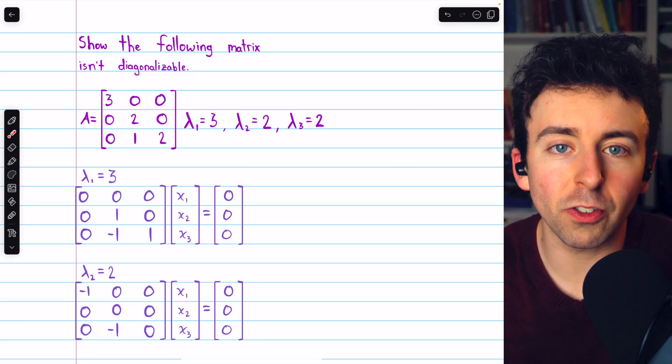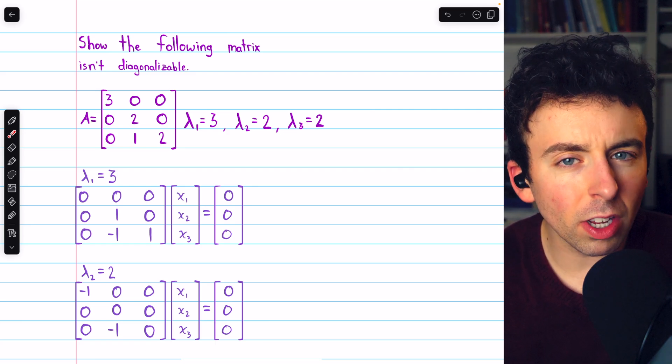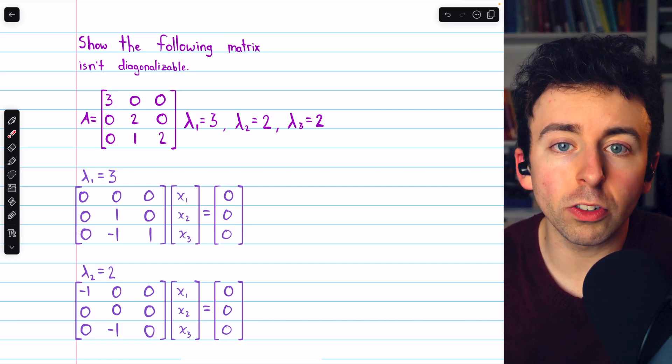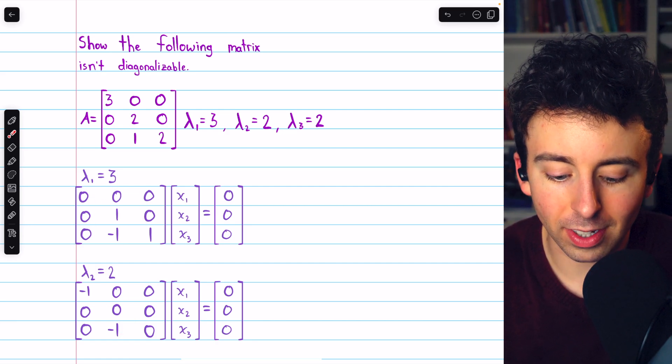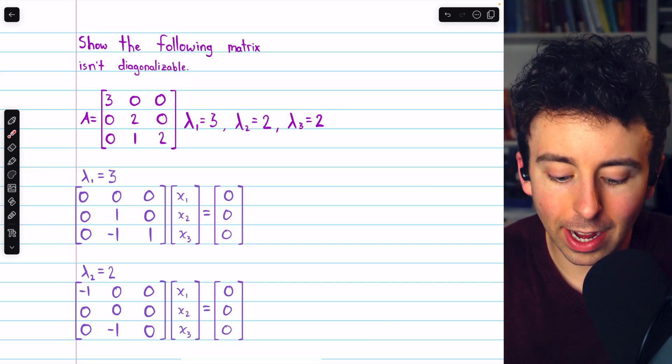We could perform Gauss-Jordan elimination and then find a basis for the solution space. However, if we just want to show that the matrix isn't diagonalizable, we could just check the nullity of these matrices. At a glance, we can see that this matrix has a rank of 2.